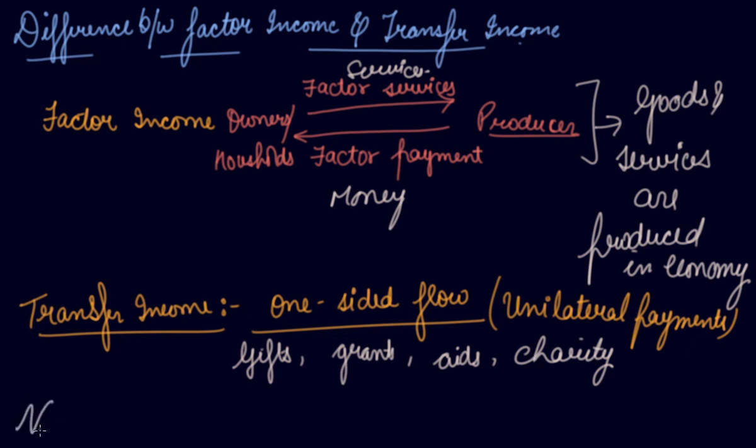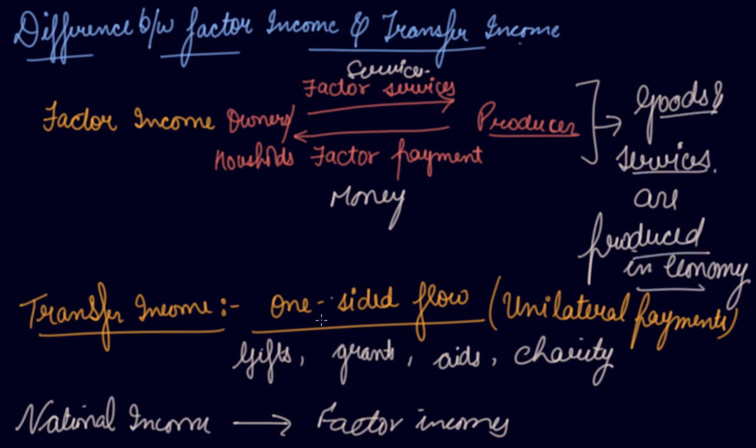While calculating your national income, we consider only factor incomes because due to the factor income, there is a production of goods and services in the economy and there is income generated. We do not take transfer income while calculating your national income because there is only unilateral payment. There is no production of goods and services in the economy due to the transfer payments.